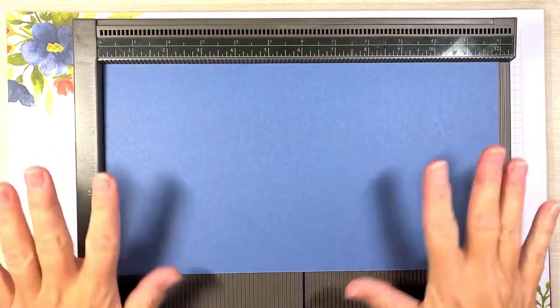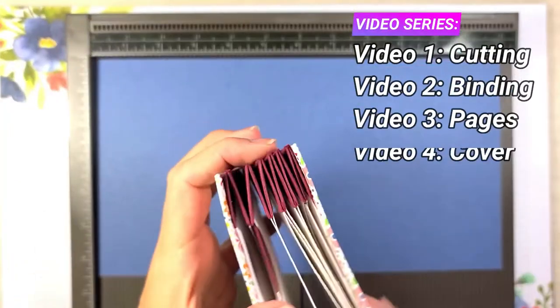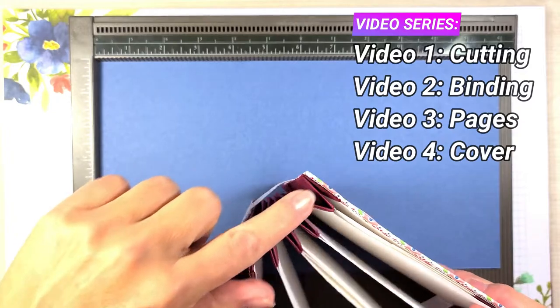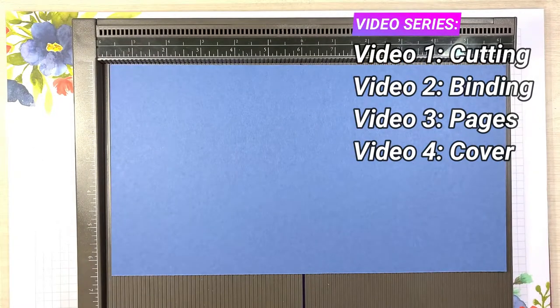Welcome to video number two. We are going to be working on the binding system which is the inside piece right here. I'm using Misty Moonlight. This is what holds our pages in place. We are going to get started.